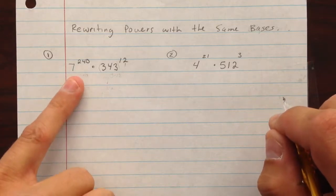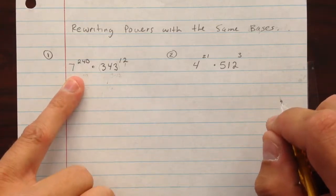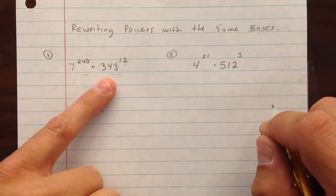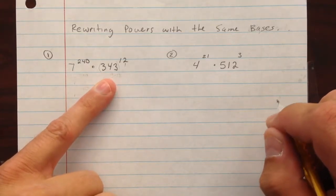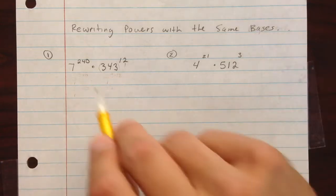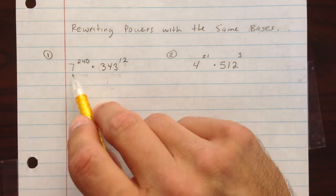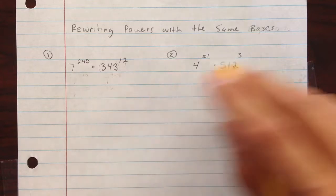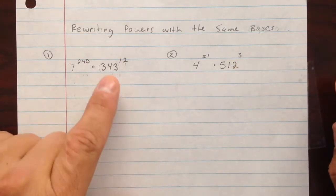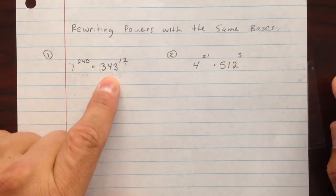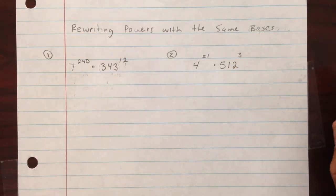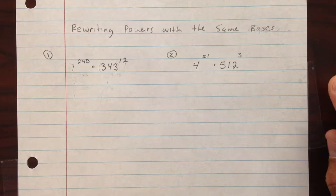This first example gives us 7 to the 240th and 343 to the 12th power. Well, knowing that 7 is prime, we know nothing can be multiplied by itself to get 7. However, we do know that we can multiply something by itself to get 343. In this case, it is 7 — specifically 7 to the 3rd.